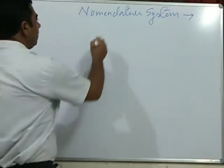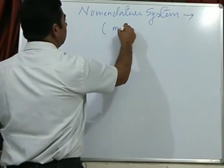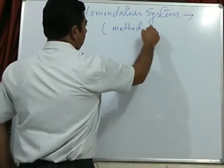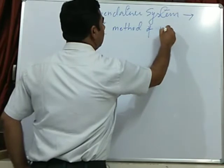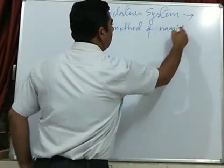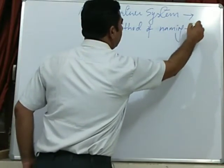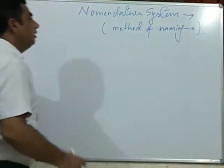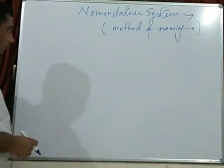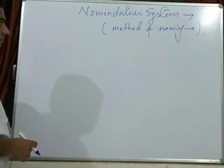This is a method of naming any biological organism. This method of naming is said to be a nomenclature system.